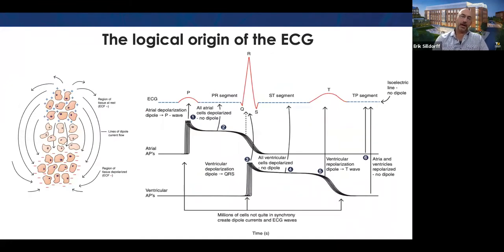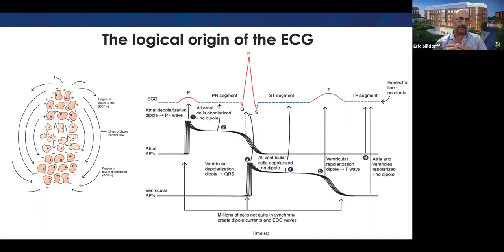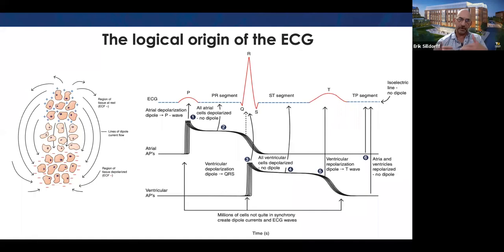Here's another one about deconstructing and reconstructing. Everyone teaches the ECG — we teach what the waves are caused by in terms of the electrical events: atrial depolarization, ventricular events, that sort of thing. But my goal — after teaching that for years — was to get students to look at the ECG and infer the mechanical. The electrical is the stimulus for the mechanical. How can I get them to look at the stimulus and infer what follows from that?